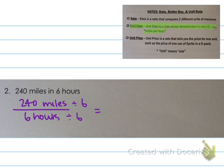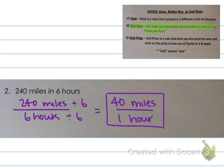240 divided by six is 40. So we have 40 miles. And then six divided by six is one. So we have one hour. And our unit rate here is 40 miles in one hour or 40 miles per hour.